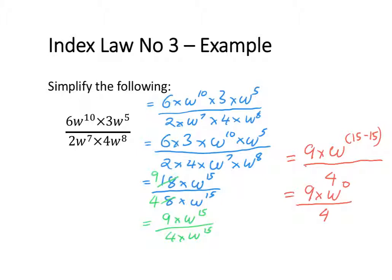Now using my knowledge of the third index law, anything to the power of 0 is going to equal 1. So the full expression 6w to the power of 10 times 3w to the power of 5, divided by 2w to the power of 7 times 4w to the power of 8, simplifies to 9 over 4.